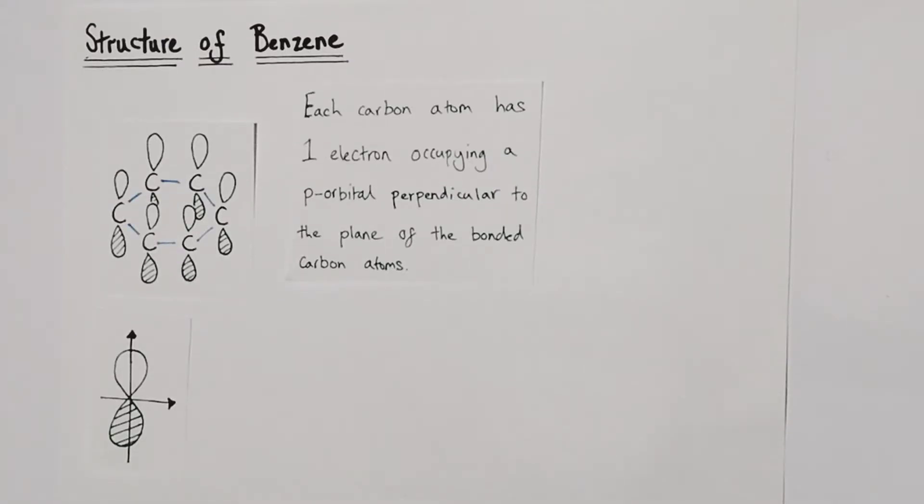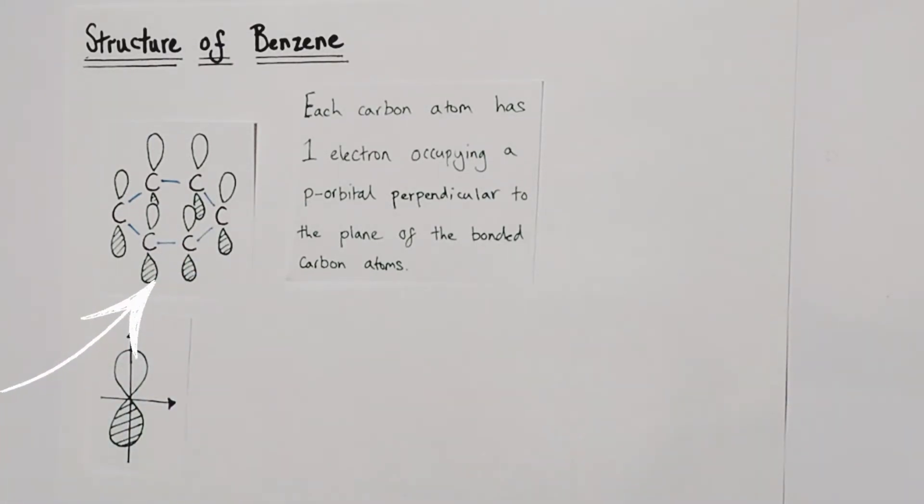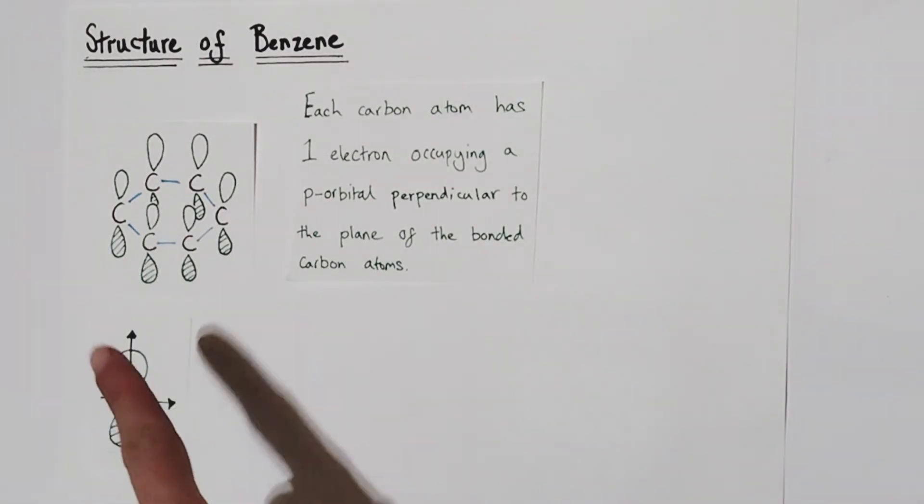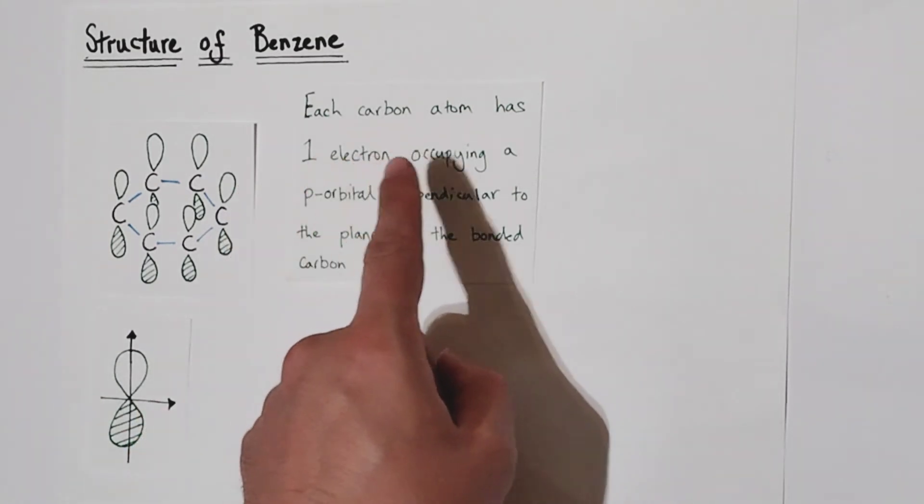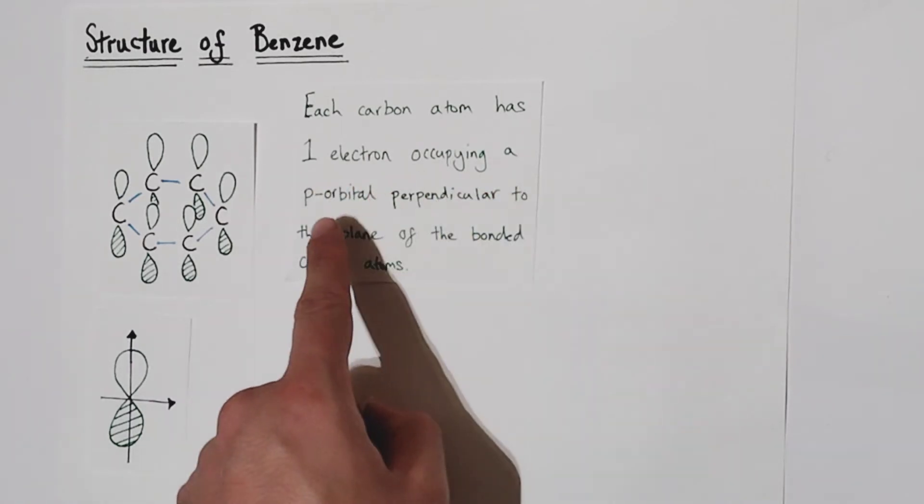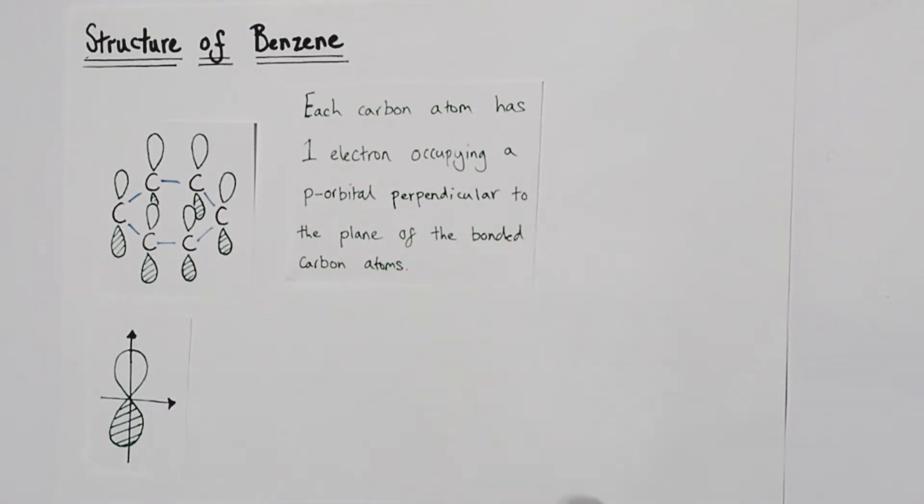So what I've done is I've redrawn our hexagonal ring of carbon atoms, but I've removed the hydrogen atoms for simplicity so we can really zone in on what those carbon atoms are doing. So each carbon atom, as you can see, has one vertical p orbital that has one electron occupying it. So in other words, each carbon atom has one electron occupying a p orbital that is perpendicular to the plane of the bonded carbon atoms.